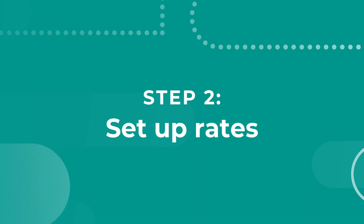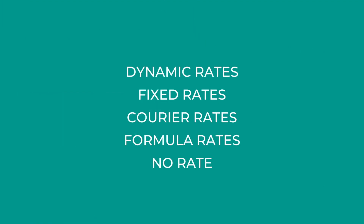Next, you can set up the rates that you would like to charge at checkout under a service level. You can set up multiple rates under a service level with their own criteria, and if multiple rates are matched on a single request, the cheapest rate will be returned. There is only one exception to this, and that is when a no rate configuration is matched. There are five types of rates that you can set up: namely dynamic, fixed, courier, formula, and no rate.